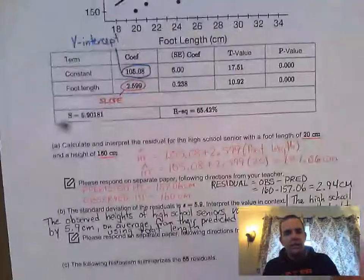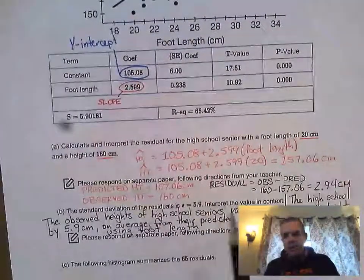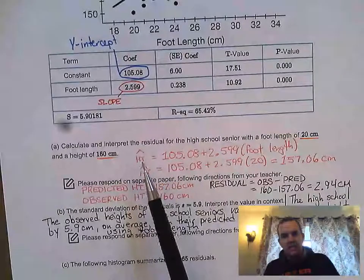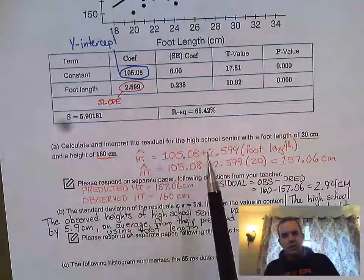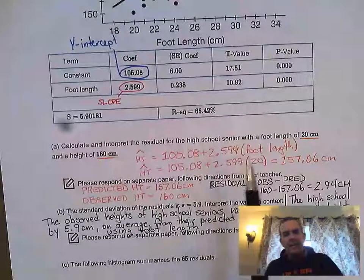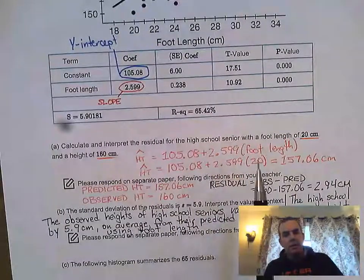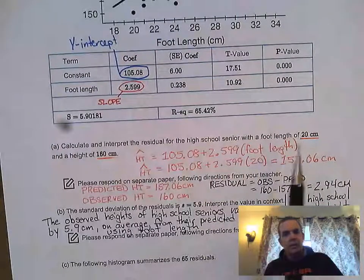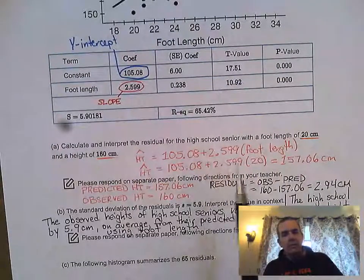The equation we make from that has this little hat: predicted height equals 105.08 plus 2.599 times foot length. We're going to substitute in 20 because that's the foot length they provided, and simplify using our calculator.